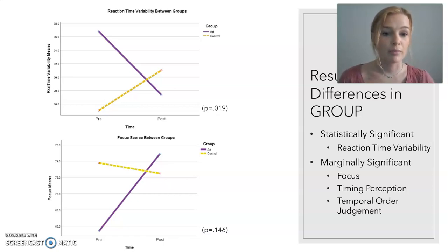You can see the purple line that represents the experimental group has significantly increased between pre and post testing. This significant increase in focus means that the art activity had a positive impact on the participants attentiveness, mindfulness, and overall just focus of the tasks that were being completed.